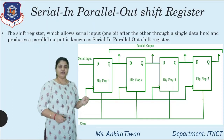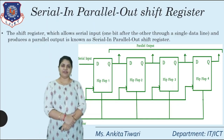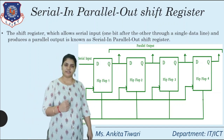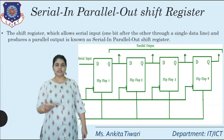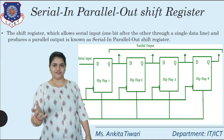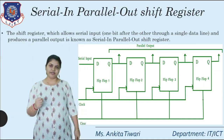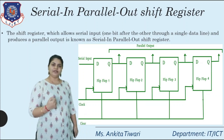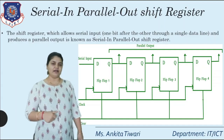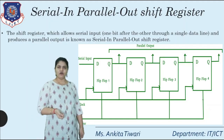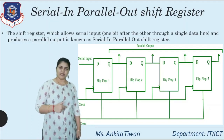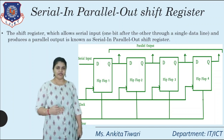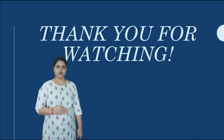To summarize what we covered in this session: we learned what a shift register is, the two basic types — shift right and shift left — and the four main types: Serial In Serial Out, Serial In Parallel Out, Parallel In Serial Out, and Parallel In Parallel Out. In this session, we covered SISO and SIPO in detail. Thank you.